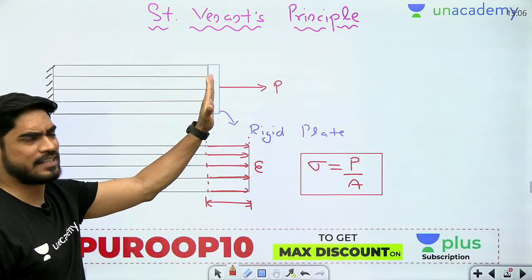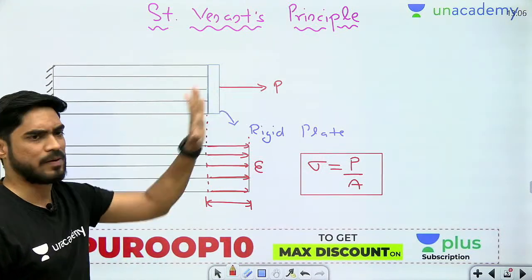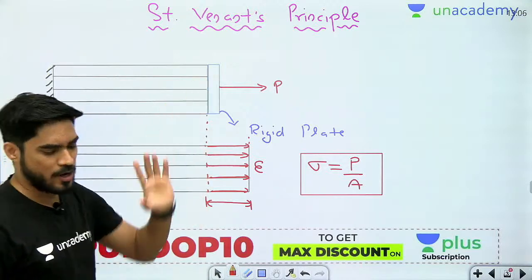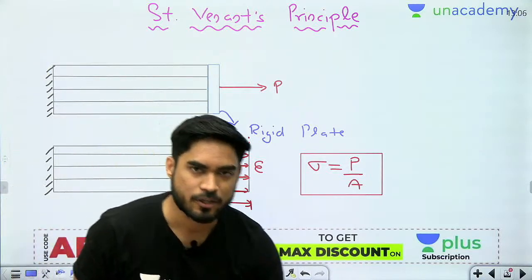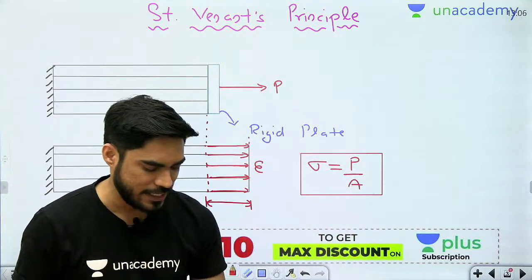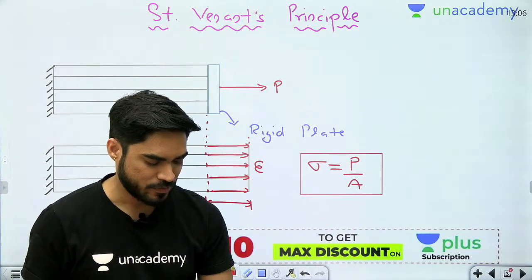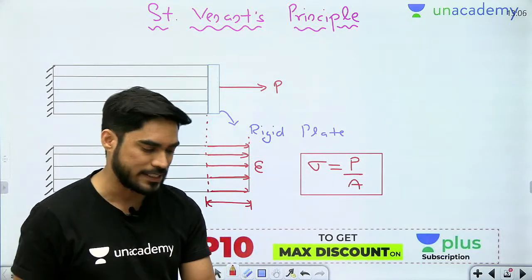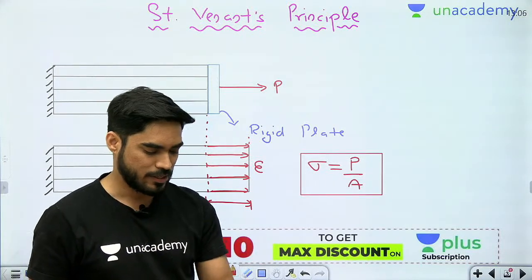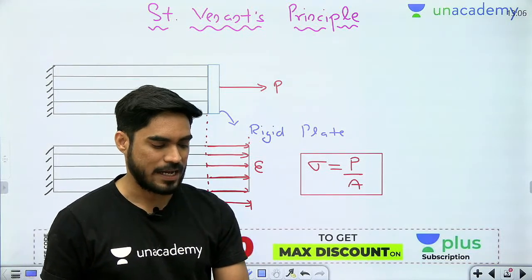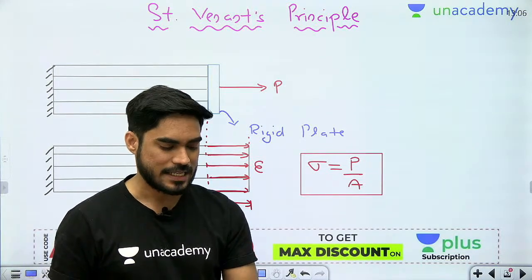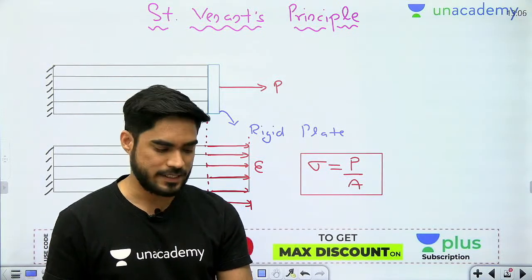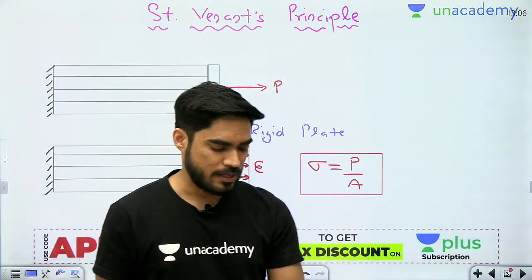When the load is applied through a rigid plate, every point's deformation is the same. And if every point's deformation is the same, that means every point's stress is also the same.